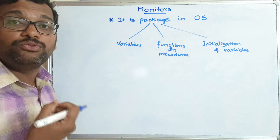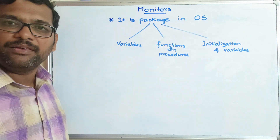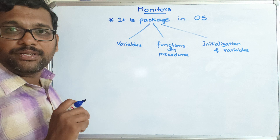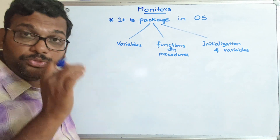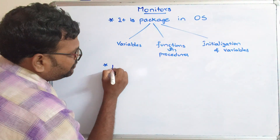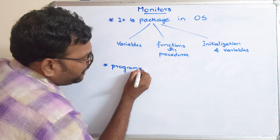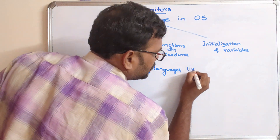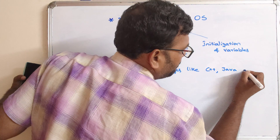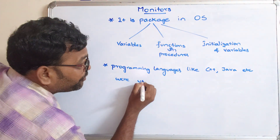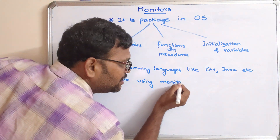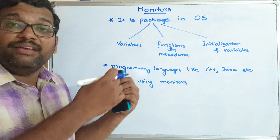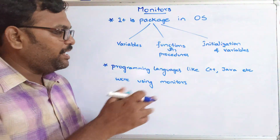These kinds of terms we use in programming languages. Monitors are language-specific — they will be implemented in programming languages such as C++ and Java. Whereas semaphores, which give process synchronization, are operating system dependent, meaning they are defined by the operating system. But monitors are defined in programming languages.